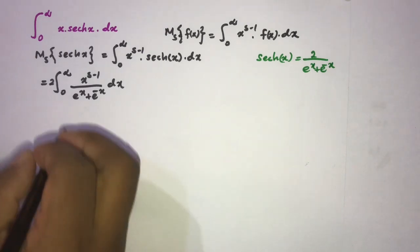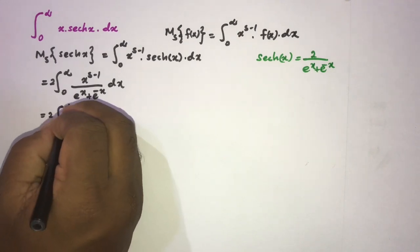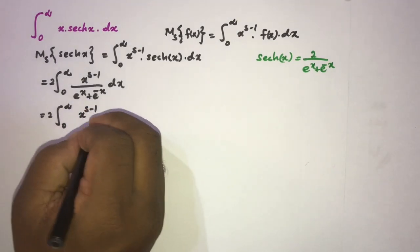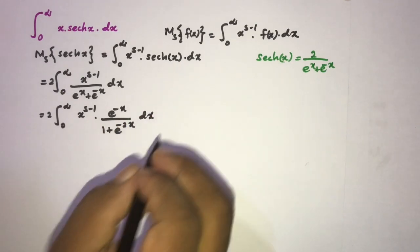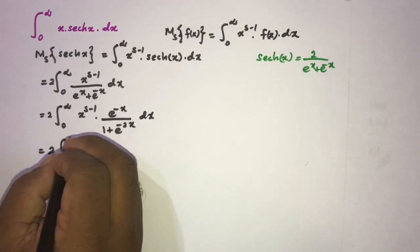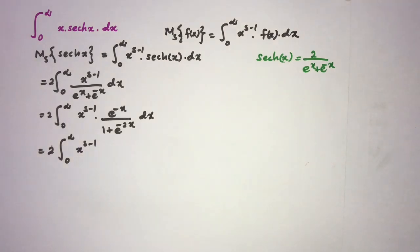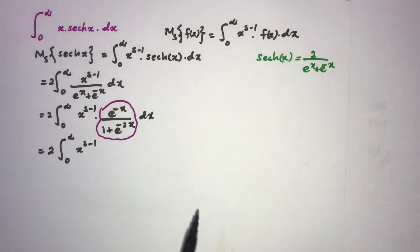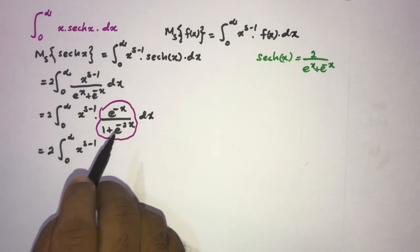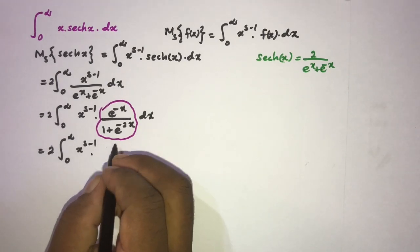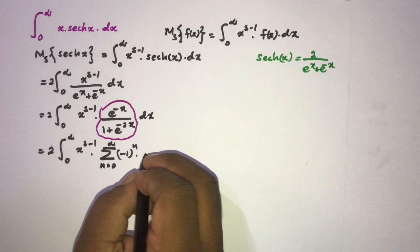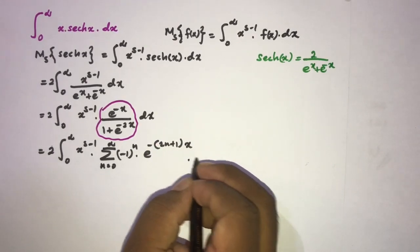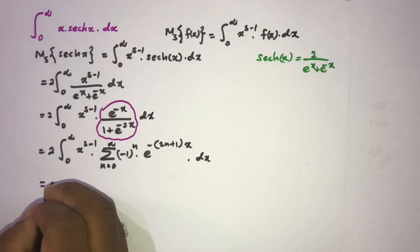I am going to divide both numerator and denominator by e^x, giving us the integral from 0 to infinity of x^{s-1} times e^{-x} / (1 + e^{-2x}) dx. We can represent this part using an infinite series — as I recall, we used this series in a previous video — giving the infinite sum: sum_{n=0}^{∞} (-1)^n e^{-(2n+1)x}.